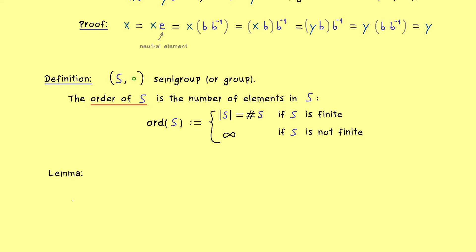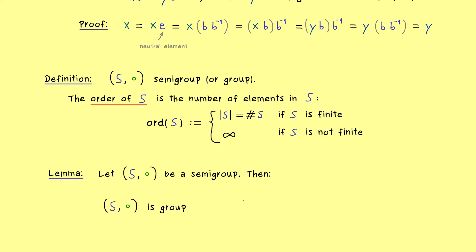First I want to show you that you can check if a semi-group is a group even if you don't know the neutral element. I call it a lemma because we will use it for the main result of this video. We just start with a general semi-group, which means we don't need to have a neutral element. Still, it turns out there is an equivalent formulation where no neutral element is stated — it is already related to our cancellation property, because it tells us that we can solve some equations.